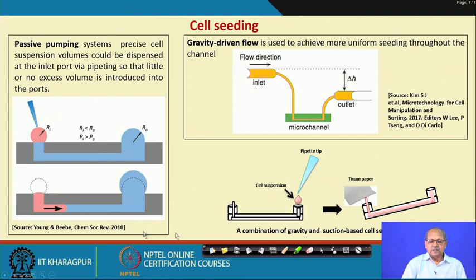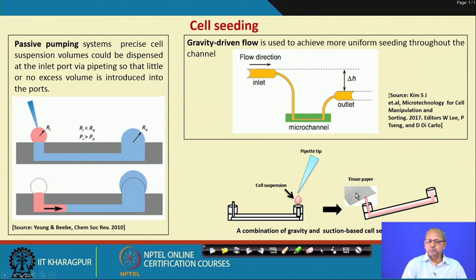Another seeding approach combines gravity-driven and suction-based methods. You drop cell suspension into the vessel, tilt the fluidic vessel about 30 degrees, and place tissue paper at the outlet, which draws media through capillary action. This also allows precise seeding of cells.